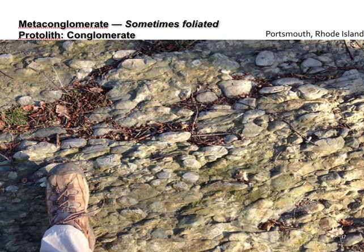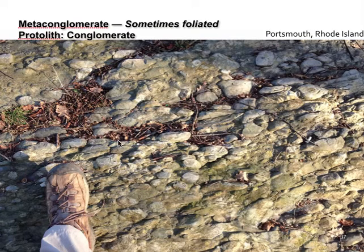Metaconglomerate is a rock type you will see in lab. Our samples aren't foliated, but some samples are foliated — as you can see me standing on here. Because foliation is a linear feature, this sample here is foliated because the clasts appear elongated in one direction.